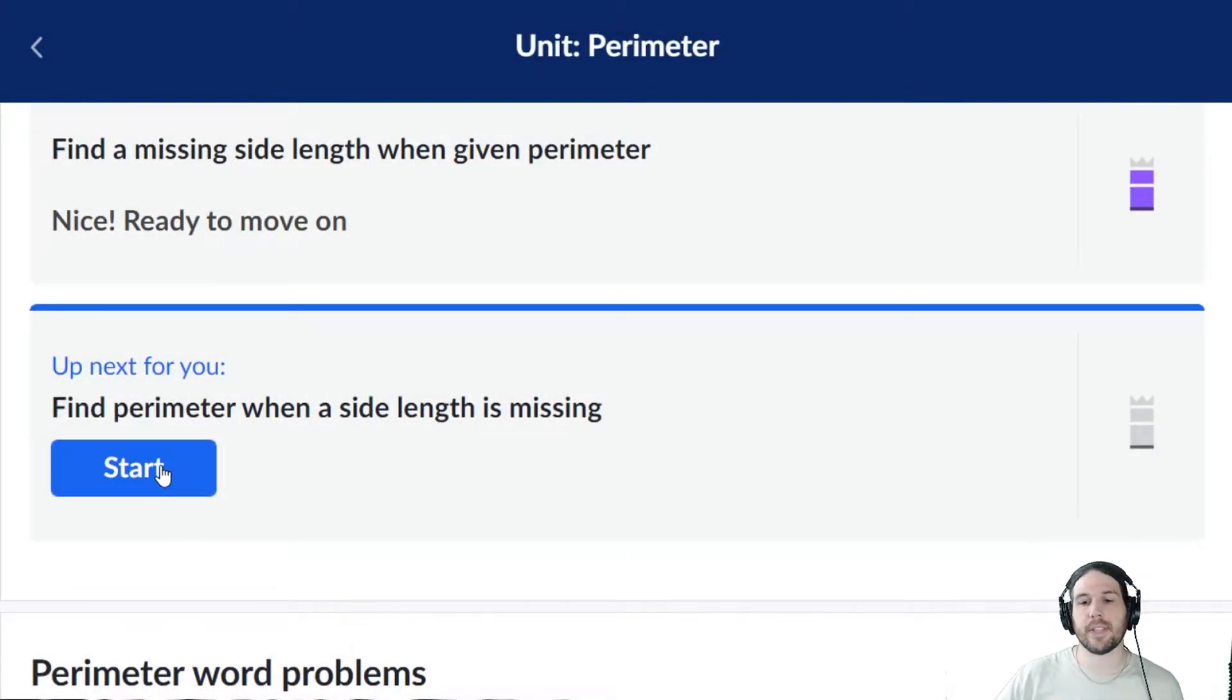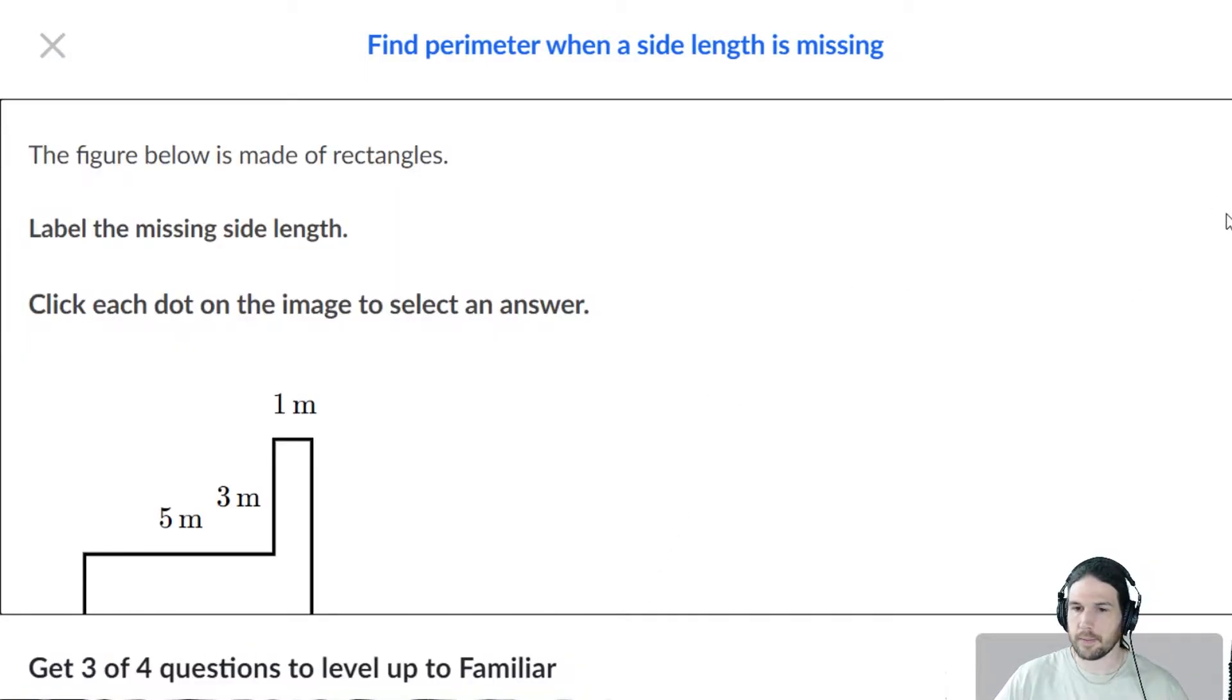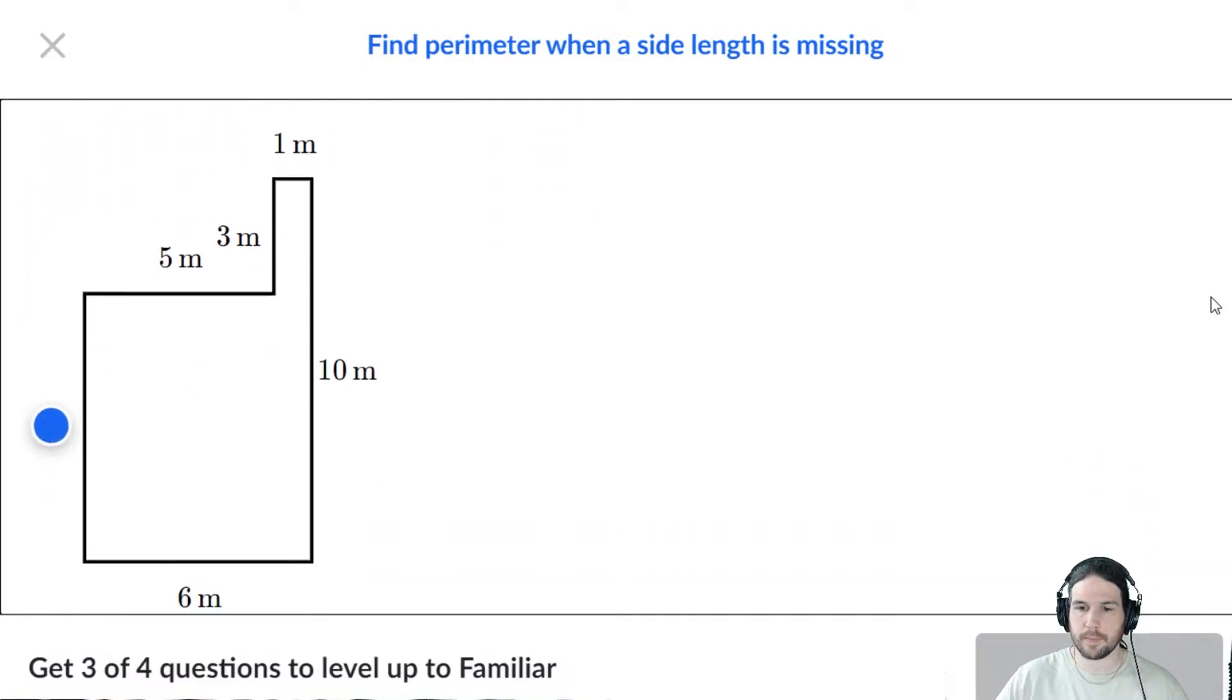Find the perimeter when a side length is missing. I don't know what they mean there. Oh, yes, I do.